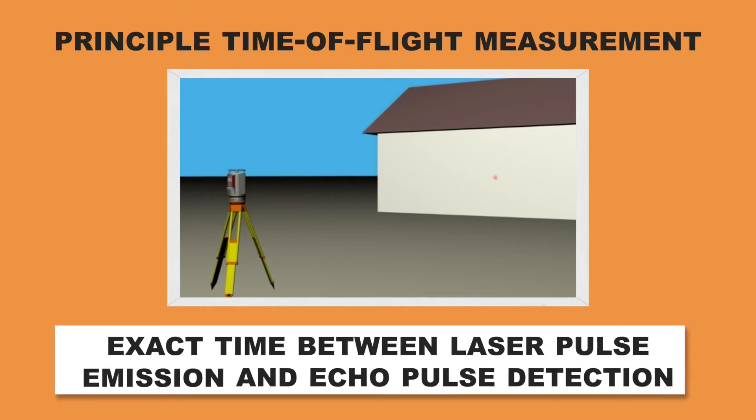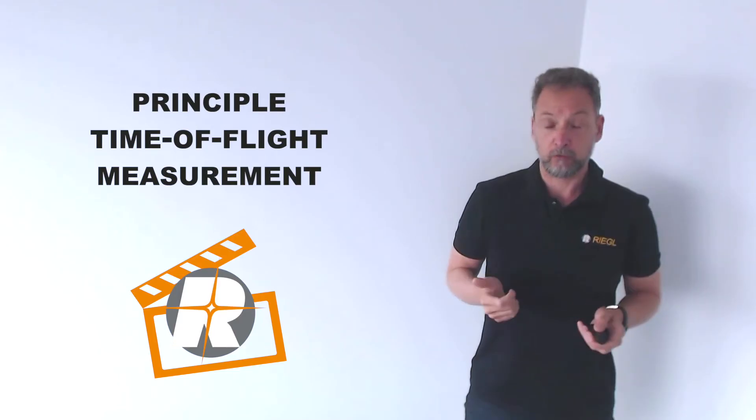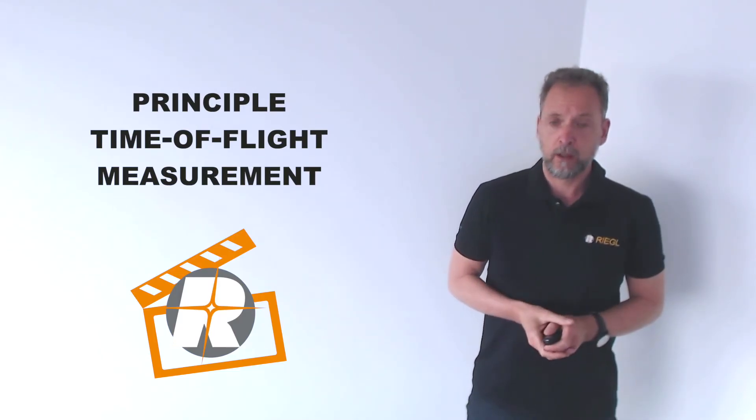We are measuring the exact time between laser pulse emission and echo pulse detection. This time difference is multiplied by the speed of light and divided by two because the laser has to go both directions, to the facade and back. The result is the exact range.